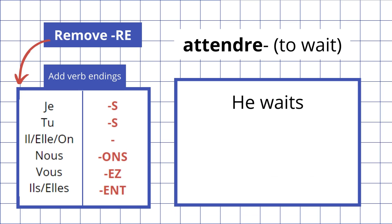Let's try with a different verb: attendre, to wait. If we want to say he waits, remove the RE — it's il — and we know there is no ending for il, so we leave it as it is: il attend.